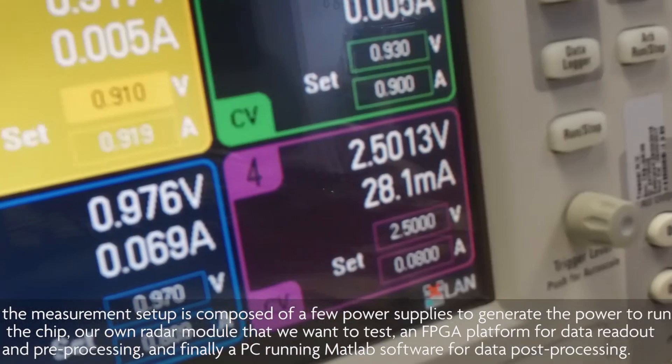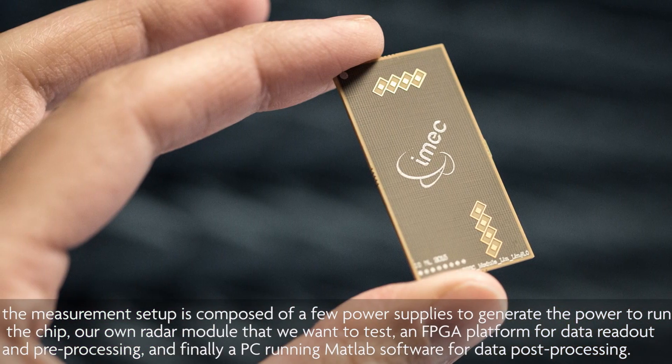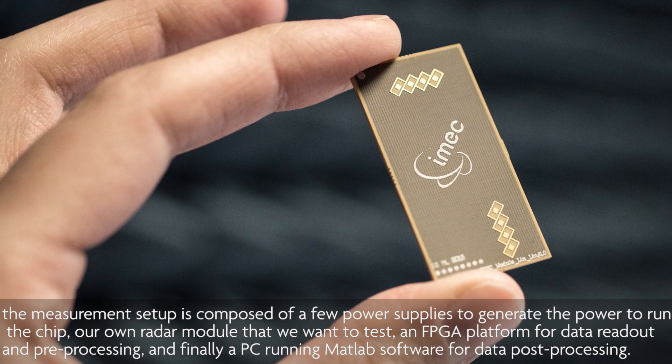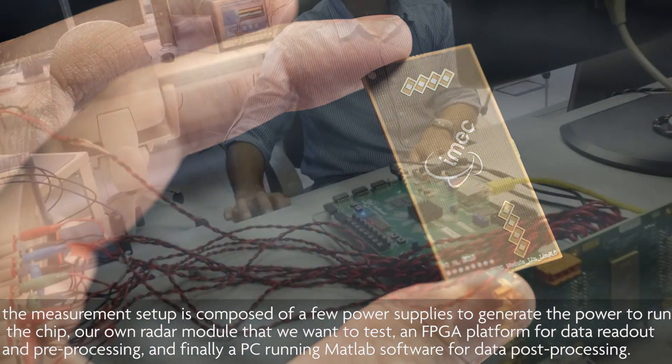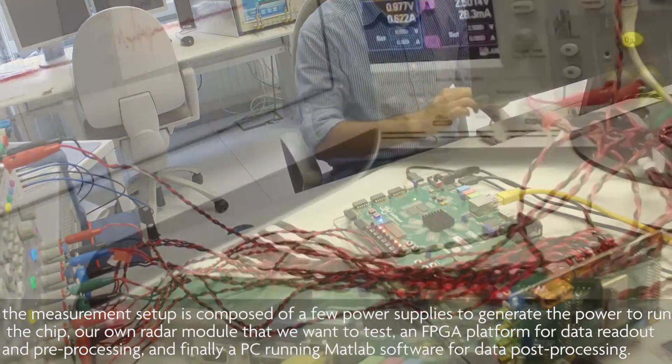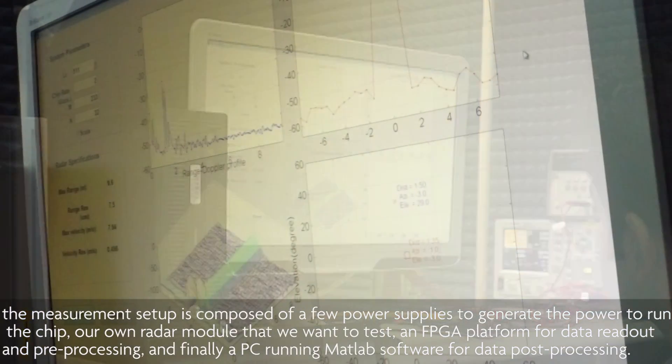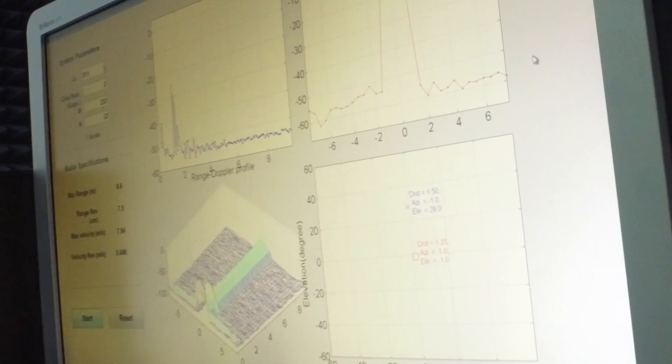The measurement setup is composed of a few power supplies to generate the power to run the chip, our own radar module that we want to test, an FPGA platform for data readout and pre-processing, and finally a PC running MATLAB software for data post-processing.